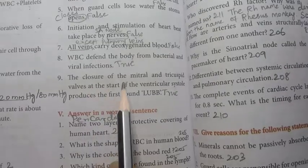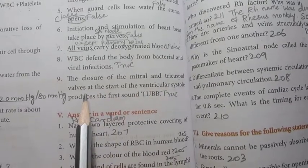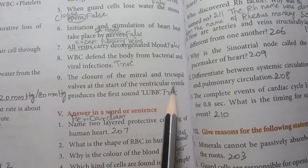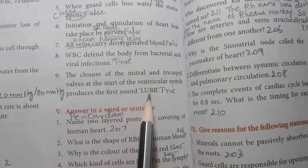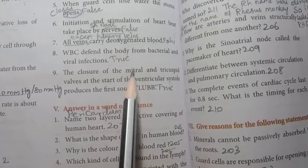Number nine: the closure of the mitral and tricuspid valves at the start of the ventricular systole produces the first sound lub. The statement is true.